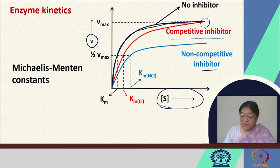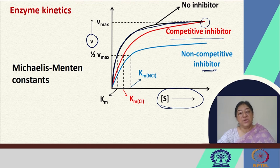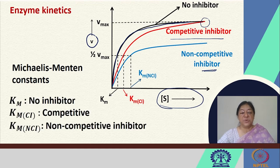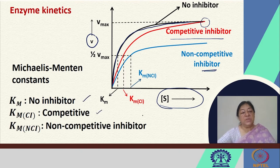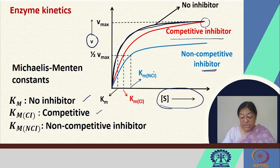With a non-competitive inhibitor, we have inhibition such that even with an increase in substrate concentration, we do not reach the same Vmax. So we have three KM values associated with no inhibitor, competitive inhibitor, and non-competitive inhibitor. We look at half of Vmax in each case to determine the KM values shown in the graph.